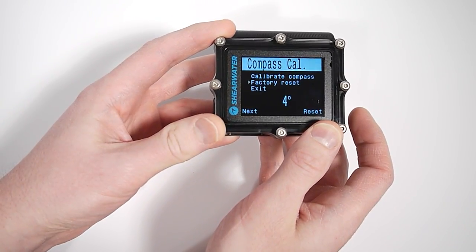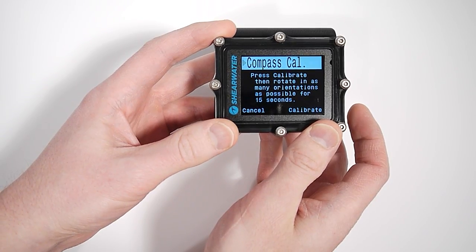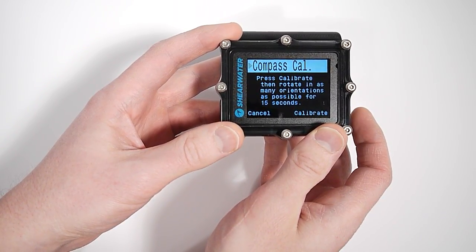So I'm in the menu, I'm going to go to calibrate and the instructions are to rotate in as many orientations for 15 seconds.